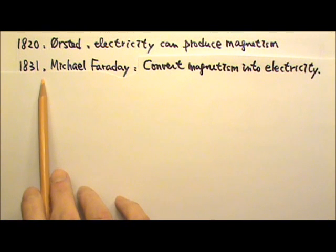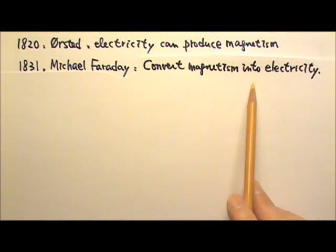In 1831, Michael Faraday successfully converted magnetism into electricity.